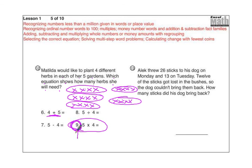The number nine right here at the beginning, in case you haven't done Excel before, goes in your check answer. Alec threw 26 sticks to his dog on Monday and 13 on Tuesday. 12 of the sticks got lost in the bushes, so the dog couldn't bring them back. So how many sticks did his dog bring back?